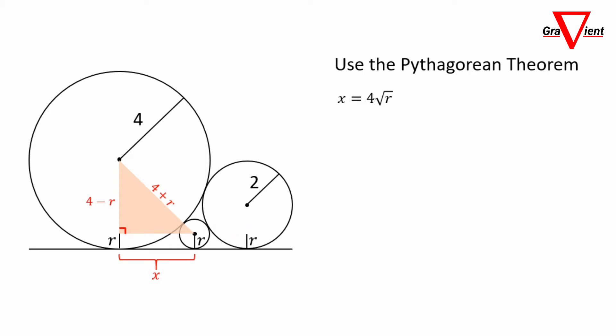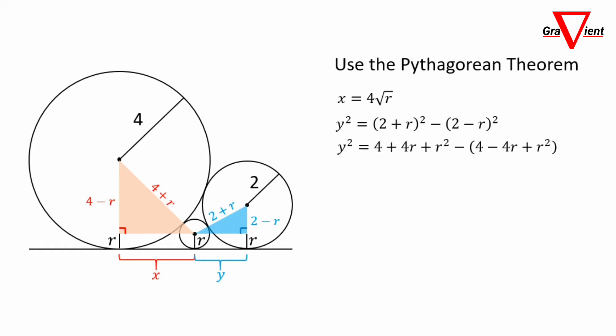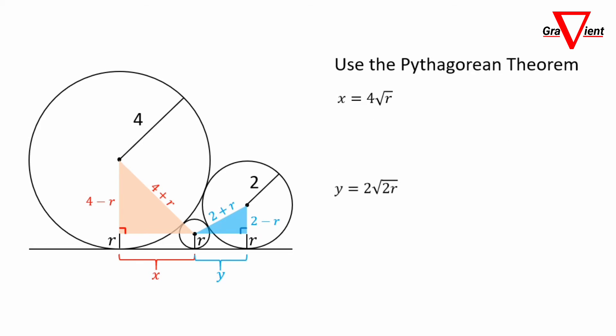Next, do the same with the circle of radius 2. Make a right triangle with base Y. The hypotenuse is 2 plus R and the other side is 2 minus R. With the Pythagorean theorem, Y squared equals (2 plus R) squared minus (2 minus R) squared. With a little algebra, we get Y equals 2 times the square root of 2R.